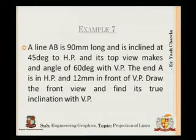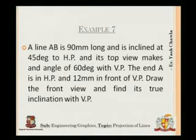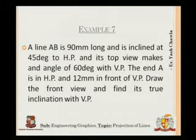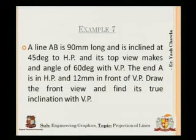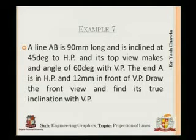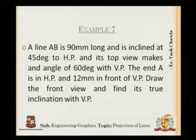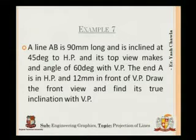A line AB is 90 mm long and is inclined at 45 degrees to VP. Its inclination of 45 degrees with VP is given, and its top view makes an angle of 60 degrees with VP. The end A is in HP and 12 mm in front of VP, so the front view point for A will be in XY and the top view will be 12 mm below XY. We have to draw the front view and find its true inclination with VP.